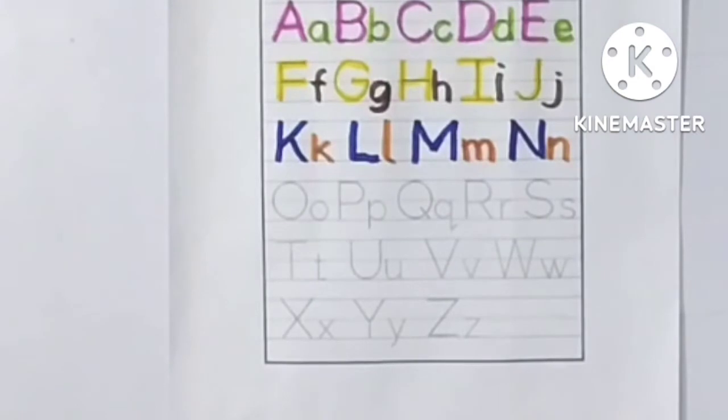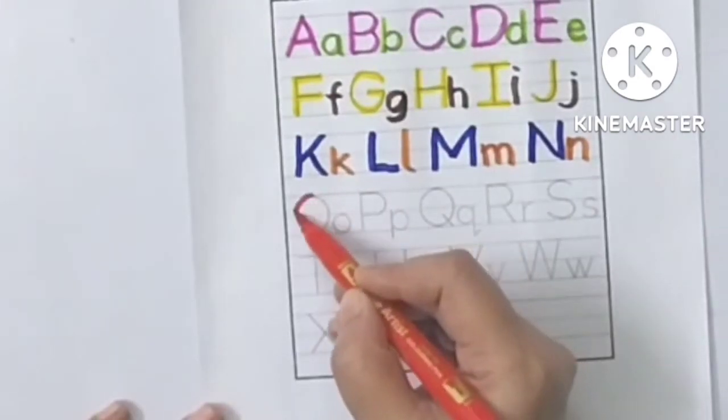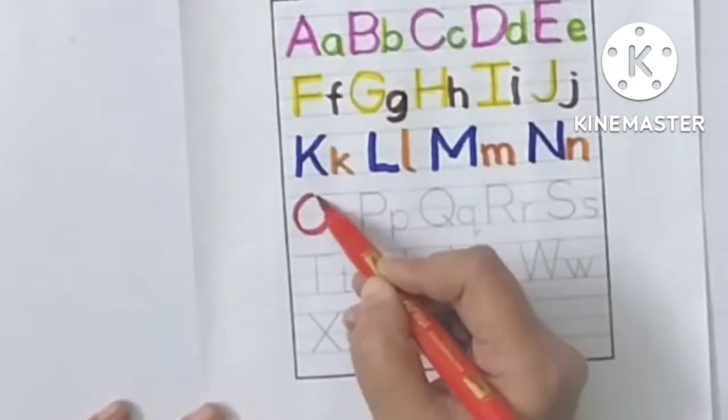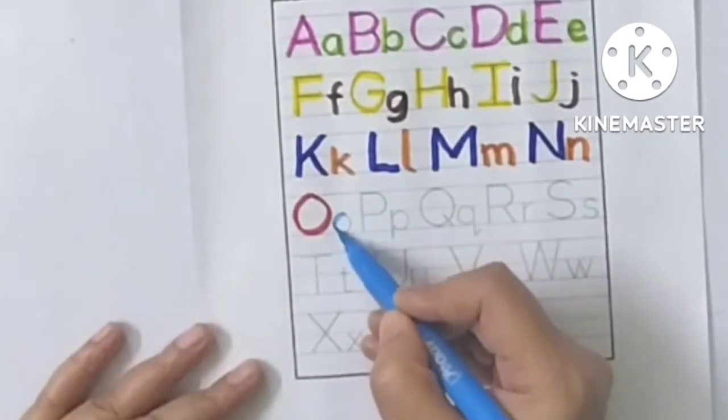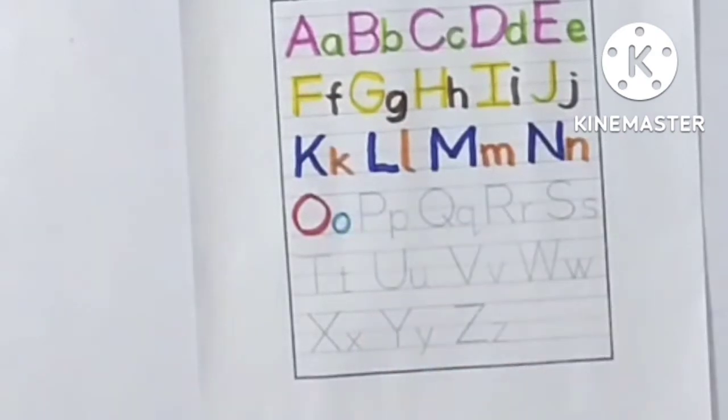Red colour. O, O for owl. White blue colour, small o, O for orange.